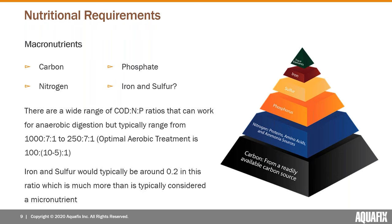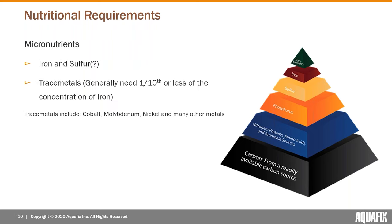Anaerobic digesters rarely become nitrogen or phosphorus deficient because they primarily need carbon. Moving on to micronutrients: cobalt, molybdenum, nickel, zinc, copper, and others are required at less than one ppm, and several can become toxic at just a couple ppm. The closer you get to optimal trace element levels the better your gas production will be and the more efficient your anaerobic process.